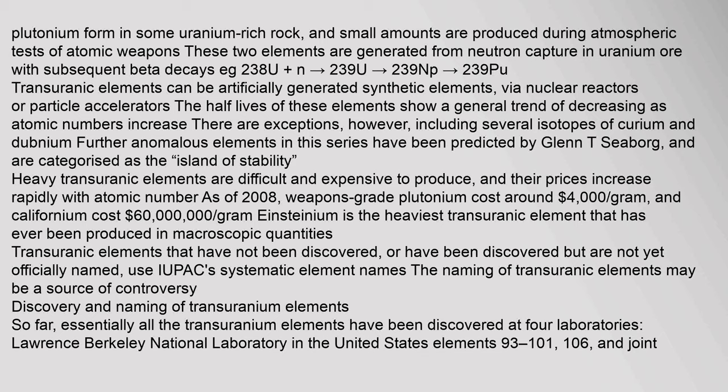Exceptions include several isotopes of curium and dubnium. Further anomalous elements in this series have been predicted by Glenn T. Seaborg and are categorized as the 'island of stability.' Heavy transuranic elements are difficult and expensive to produce, and their prices increase rapidly with atomic number. As of 2008, weapons-grade plutonium cost around $4,000 per gram, and californium cost $60 million per gram. Einsteinium is the heaviest transuranic element ever produced in macroscopic quantities. Undiscovered or unofficially named elements use IUPAC's systematic element names.